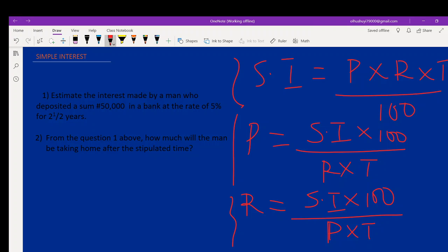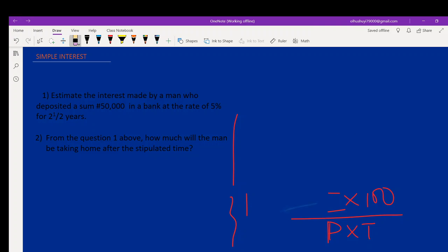Let's look at the question before us. The question says: estimate the interest made by a man who deposited a sum of 50,000 naira in a bank at a rate of 5% for two and a half years.